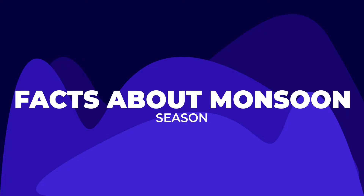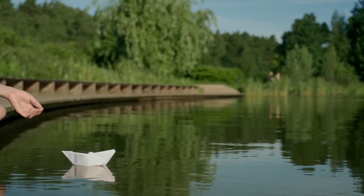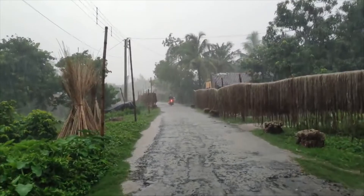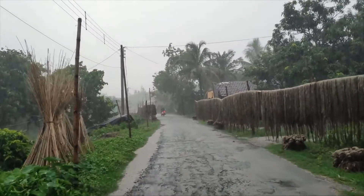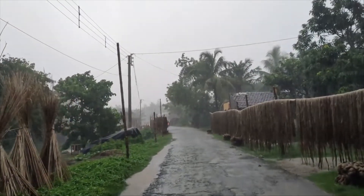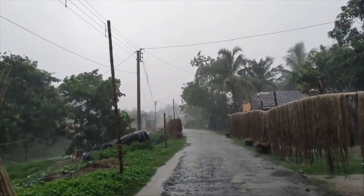Firstly, let us understand what is monsoon — definitely more than our childhood paperboard fun. Basically, monsoon is a wind which experiences a seasonal reversal of 180 degrees in its direction. It causes wet and dry seasons. This type of climate gets maximum rainfall in 4 months in a year. Monsoon always blows from cold to warm regions.